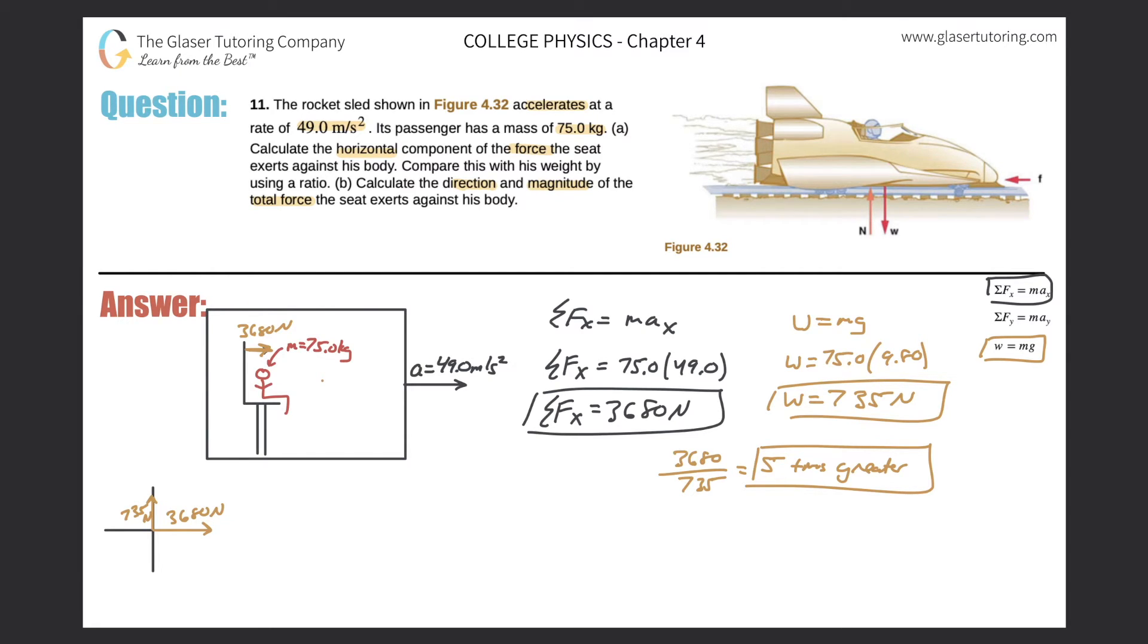So now how do I find the resultant of this? Well, easy. These are both x and y components. This is the x, this is the y. So we can simply remember our resultant formula, that the resultant is equal to the square root of the sum of all the x's squared plus the sum of all the y's squared.